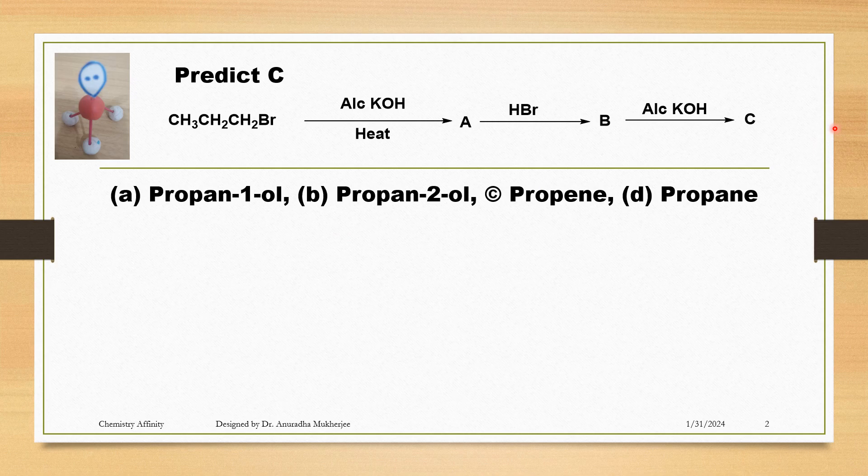There are four options for compound C: propan-1-ol, propan-2-ol, propene, and propane.